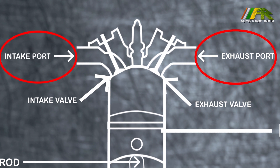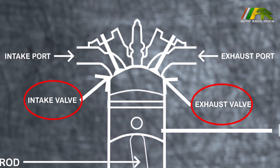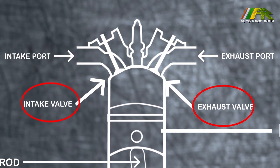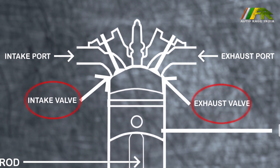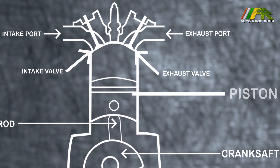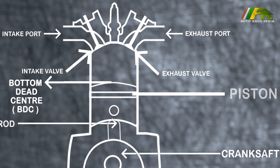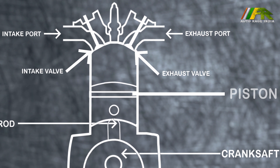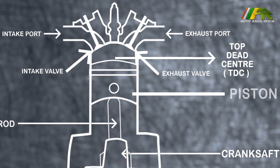Now at the top of the cylinder are ports. One port lets fresh air come into the chamber, and another port lets exhaust gases go out. Opening and closing of these ports happen because of valves. When the piston is at its bottom-most position, it is known as BDC or bottom dead center. And when the piston is at its top-most position, it is known as TDC or top dead center.